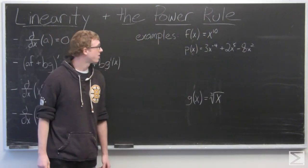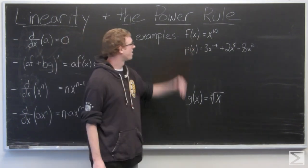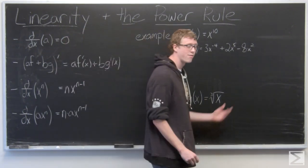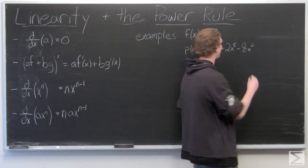So we're going to take a look at some quick examples here. We have f of x equals x to the 10th. f prime of x is going to be 10x to the ninth.